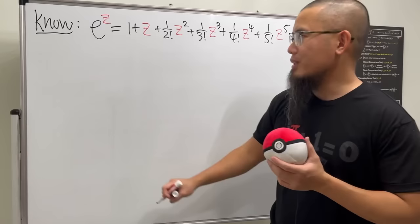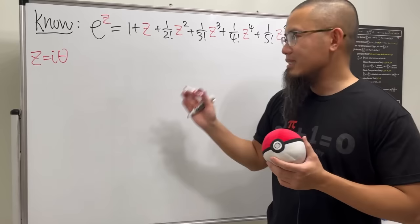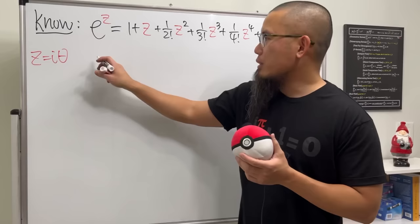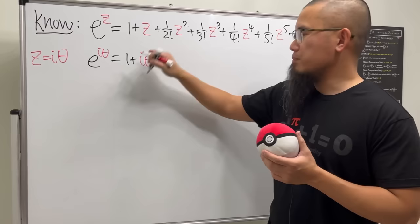We are going to let z equal i theta. And this is the reason why we use z instead of x, because z is actually a complex variable. So this right here looks like we have e to the i theta. This right here is going to be 1 plus i theta. Just plugging i theta into all the z's.